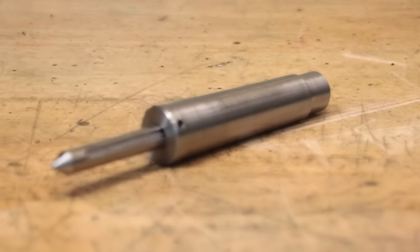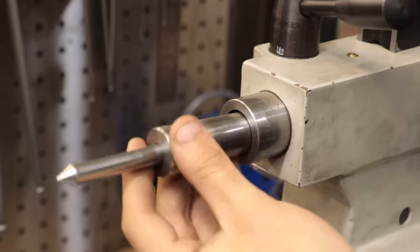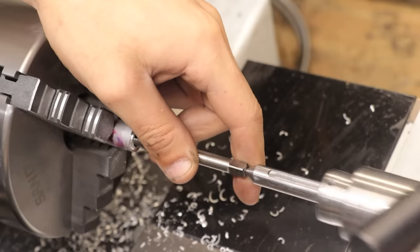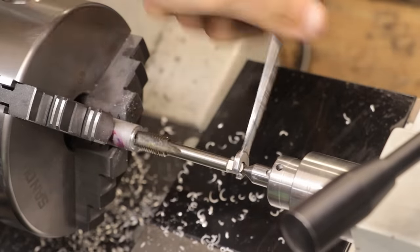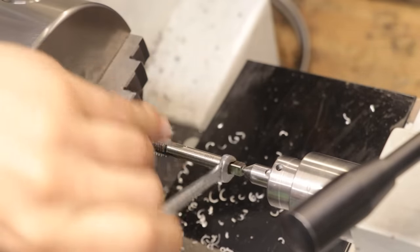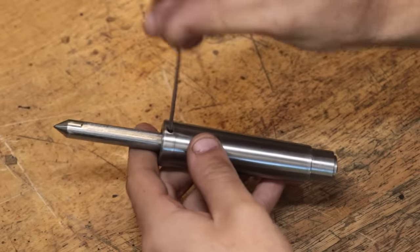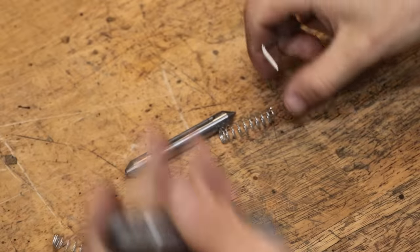So stepping up to a slightly more advanced project now, we have the tap follower, which I made in the previous video. Now if you don't know what they are, a tap follower is simply a tool which goes in the tail stock and has a spring-loaded center which pushes against the tap, which helps it locate and tap very straight holes. These things are so useful, especially on a lathe, because there just isn't a whole lot of room for my tap wrenches.